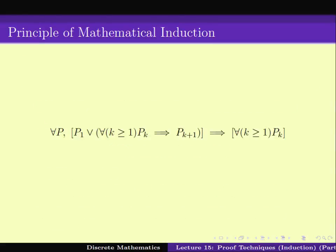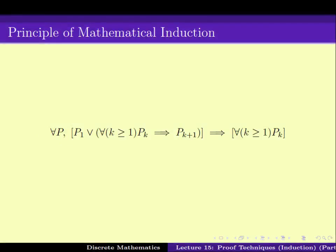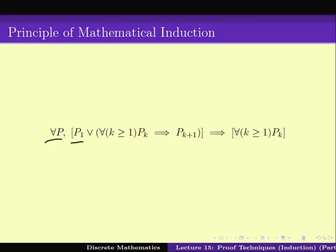For this approach, we need a particular axiom which states that what we are doing is correct. This is called the Principle of Mathematical Induction, and it says that for any predicate, if we first prove P1 is true, and for all k greater than or equal to 1, if we can prove Pk is true implies Pk+1 is true, then that means for all k we end up proving Pk is true. It is a roundabout but very powerful technique, and we will be seeing more of it in the next couple of weeks.